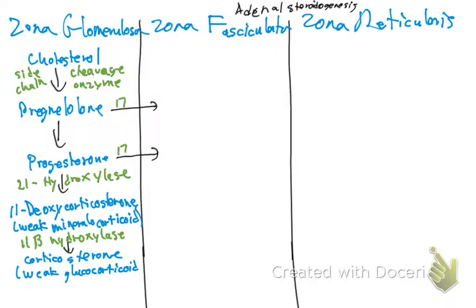So your corticosterone is a weak glucocorticoid, and from corticosterone we go to the final product of the zona glomerulosa — aldosterone. Corticosterone becomes aldosterone, which is the main mineralocorticoid.